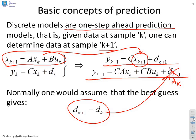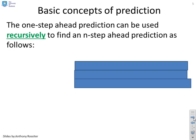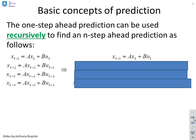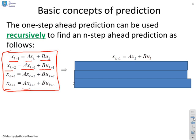The one-step ahead prediction can be used recursively to find an n-step ahead prediction, and this is the common thing that people do in predictive control. First of all, what I'm going to do is write down my state space model at lots of different samples. I've not changed anything apart from the subscript. So I've got x_{k+1} = Ax_k + Bu_k, x_{k+2} = Ax_{k+1} + Bu_{k+1}, and so on. All I've done is write the model at lots of different sample instances, but nothing clever, no tricks, just the same model, just changing the subscript.